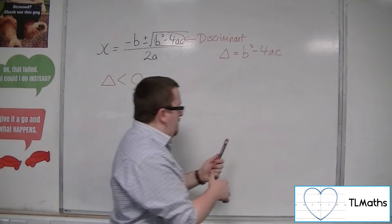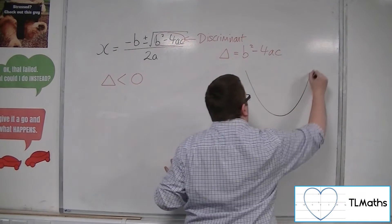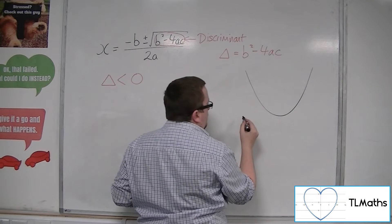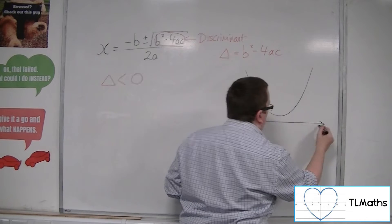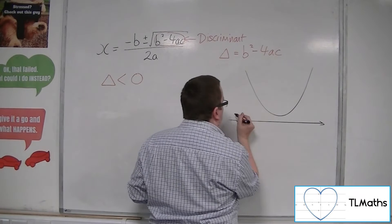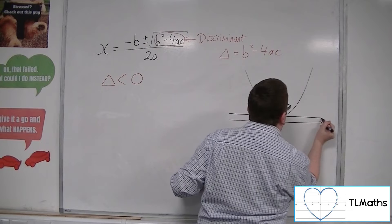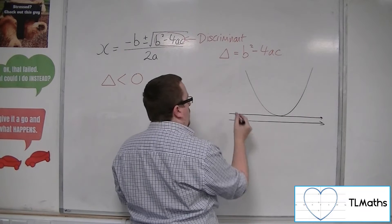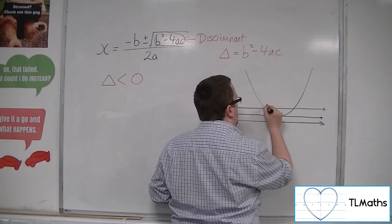Because remember that we've got this situation where this quadratic is either not crossing the x-axis at all, or it crosses it at one point, or it crosses it at two distinct points.